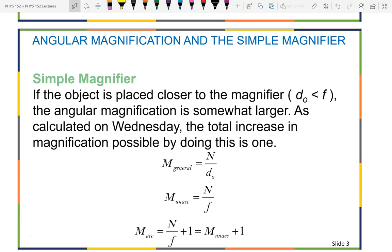The image is at your far point, which we will say is infinitely far away. Although in reality, for many of us the far point might be a meter or so away. So unaccommodated viewing is a relaxed eyeball, and for the relaxed eyeball the magnification you can get is your near point divided by the focal length of the lens.